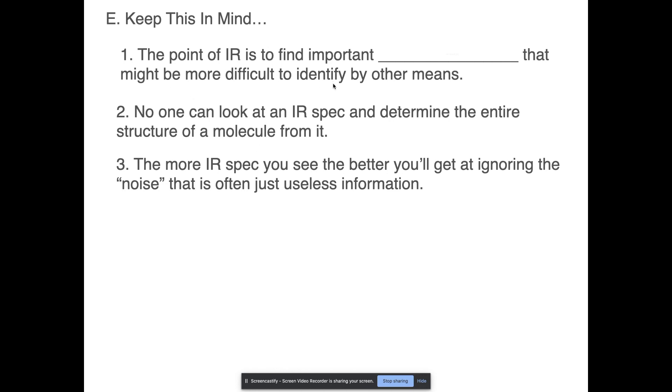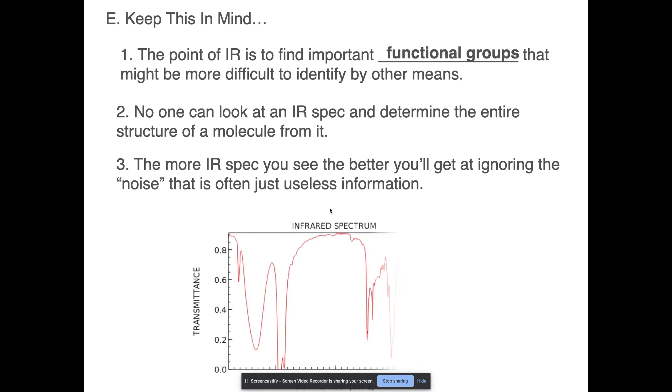So other things to keep in mind, the point of IR is basically to find functional groups that might be more difficult to identify by other means. So if you're using NMR or something, proton NMR or carbon NMR, sometimes finding these functional groups means you'd have to do a little bit more work. IR spec is a great way to just identify some very obvious functional groups. No one can look at an IR spec and determine the entire structure of the molecule from that. So don't expect that you're going to see an IR printout and say, okay, I can figure out where every single little functional group might be located in my molecule. That's not really the point. Now, the more IR specs you see, the better off you get at ignoring all of the noise that occurs. A lot of it is useless information.